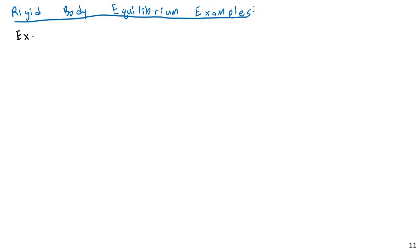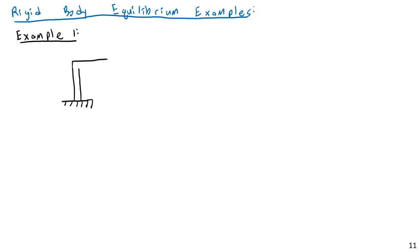Alright, so let's take a look at Example 1. Now, in the next lecture I'm going to get into detail looking at how objects are supported by pin, roller, and fixed supports. But for now, let's start with something very simple — let's talk about a simple L-shaped bracket.